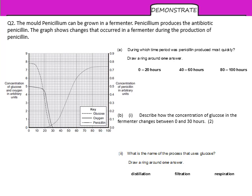Question two looks at the mold Penicillium, which can be grown in a fermenter. Penicillium produces the antibiotic penicillin. From the graph shown, identify which time period penicillin was produced most quickly, describe how the concentration of glucose changes between 0 and 30 hours, and state the name of the process that uses glucose.